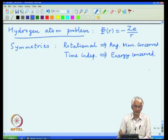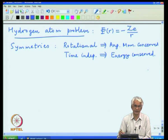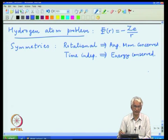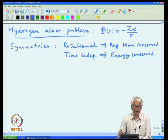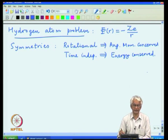One of the quantum numbers in all time-independent problems is energy itself, because the Hamiltonian is a constant of motion. The task then is to identify all the operators which commute with the Hamiltonian. They will give rise to the so-called eigenstates which are stationary — that means they do not evolve in time.